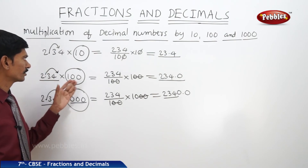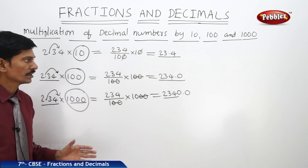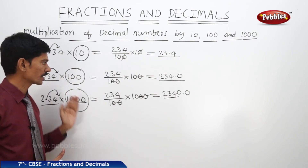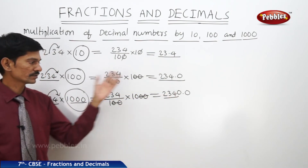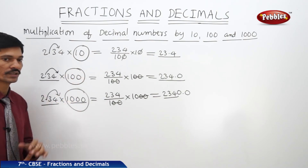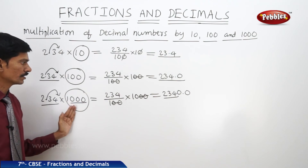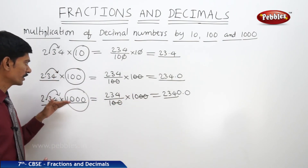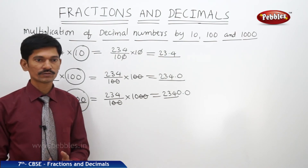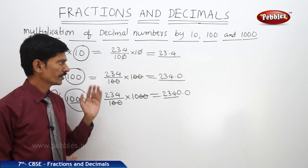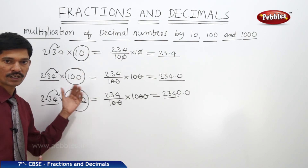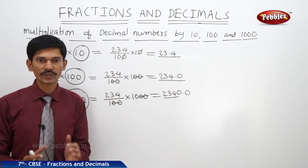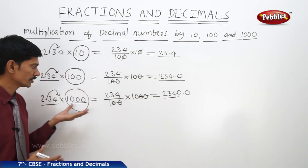So when you multiply any decimal number by 10, 100, 1000, or 10,000, the digits in the product are the same as the digits in the given decimal number. But the decimal point is shifted to the right by as many digits as there are zeros in the number — like 10, 100, or 1000. If there are 3 zeros in the number, the decimal point will be shifted to the right by 3 digits. When a decimal number is multiplied by 10,000, there are 4 zeros, so the decimal point is also shifted to the right by 4 digits.